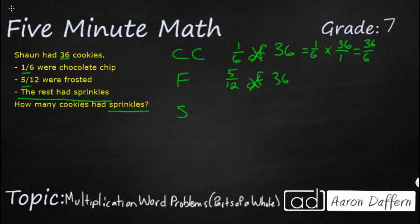So it's 36 over 6. That is a mixed number. We need to divide. So 6 goes into 36. That's a basic fact. We know that that's 6. So 1/6 of 36 is 6. So I've got 6 actual chocolate chip cookies.